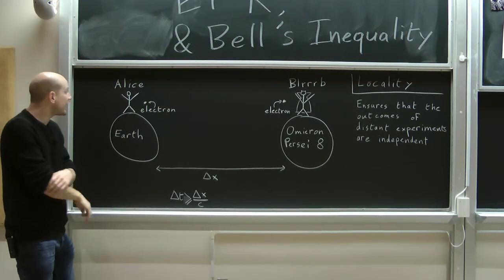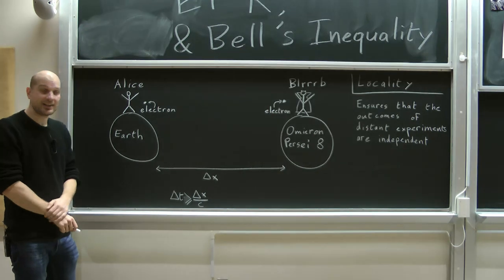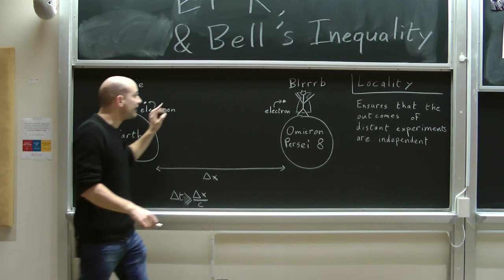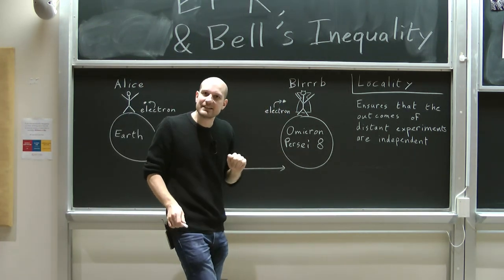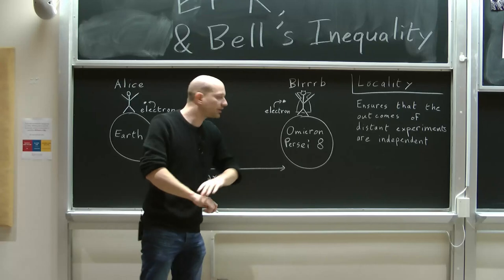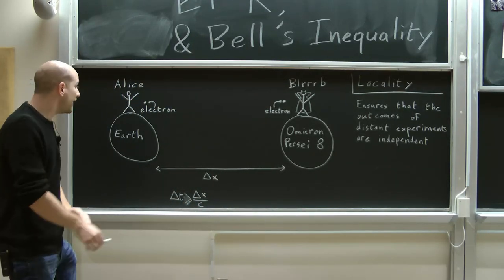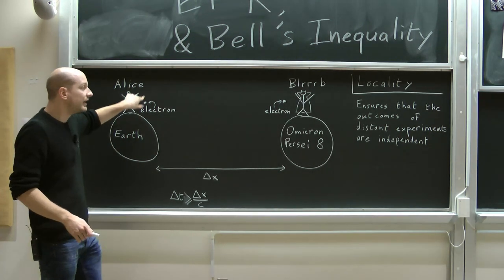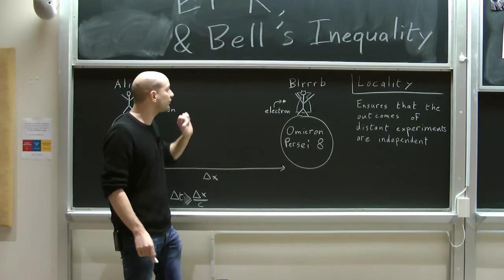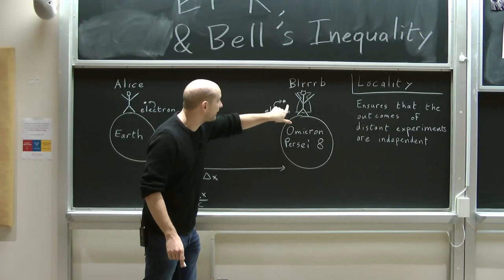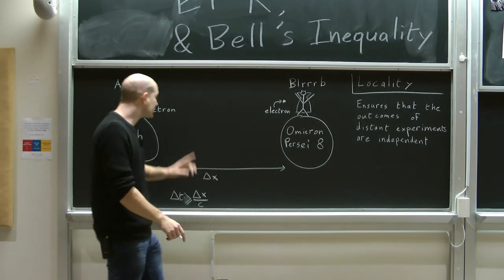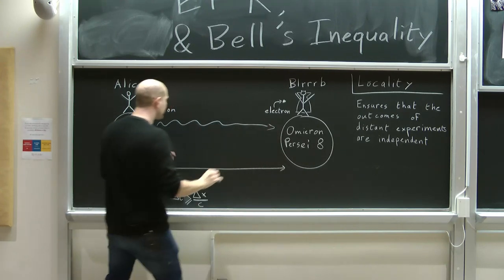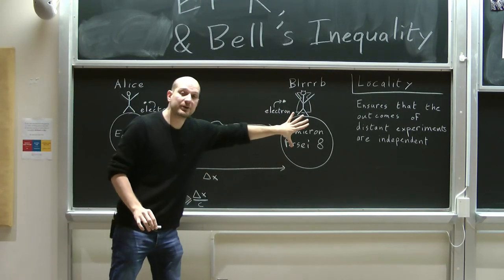The principle of locality implies that if Alice does something to her electron, then there cannot be an instantaneous effect on Blurb's electron all the way on Omicron Persei 8. To say it more precisely, if Alice does something to her electron, the time we would have to wait for an effect to propagate to Blurb's electron has to be at least the amount of time it would take for a beam of light to travel from Earth to Omicron Persei 8.